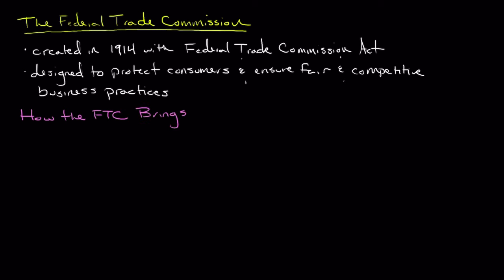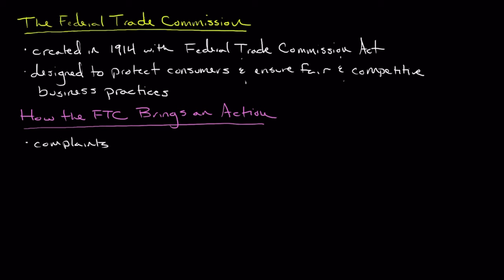When the FTC identifies a potential violation, it initiates an investigation involving collecting evidence, interviewing witnesses, and analyzing records. If a violation is confirmed, the FTC has several courses of action available.